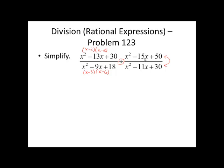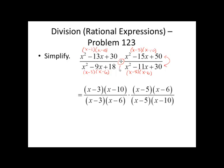In the second numerator, two numbers that multiply to 50 but add to negative 15. That's going to be x minus 5 times x minus 10. And in the denominator, two numbers that multiply to 30 but add to negative 11. That's going to be x minus 5 times x minus 6. We'll go ahead and invert this fraction and change the operation to multiplication.